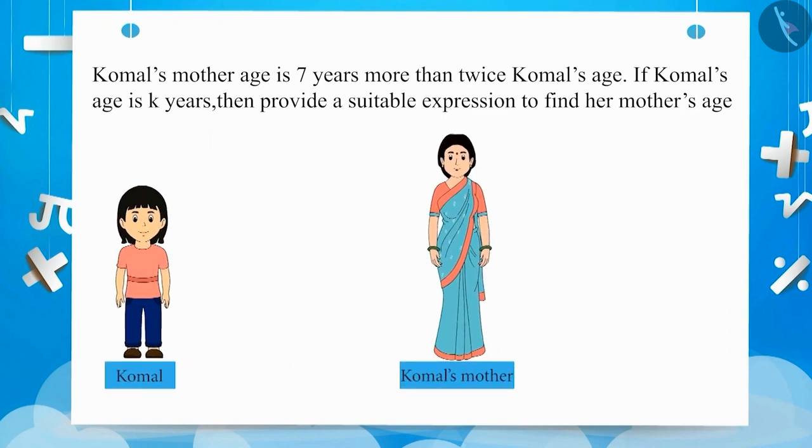As we know, Komal's age is k years and Komal's mother's age equals 7 more than twice Komal's age, which is 2 multiplied by k plus 7, equal to 2k + 7. Therefore, the expression to find her mother's age will be 2k + 7.